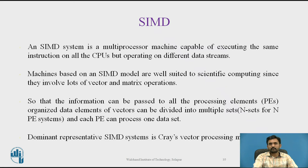In SIMD, information can be passed to all the processing elements — that is, different processors. Organized data elements of vectors can be divided into multiple sets, and each processing element can process one data set. A representative example is the Cray vector processing machine.